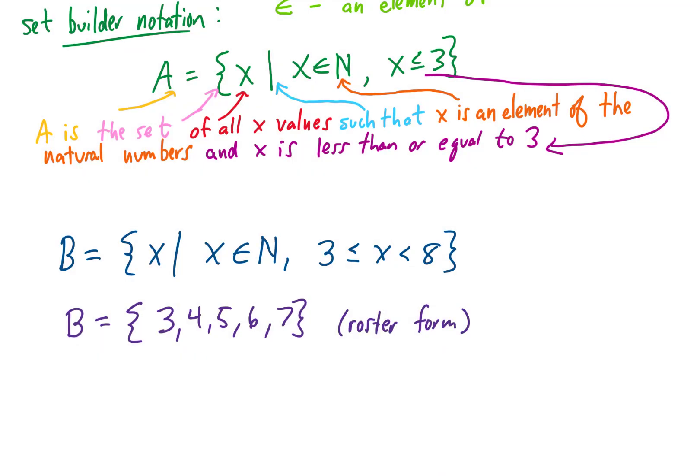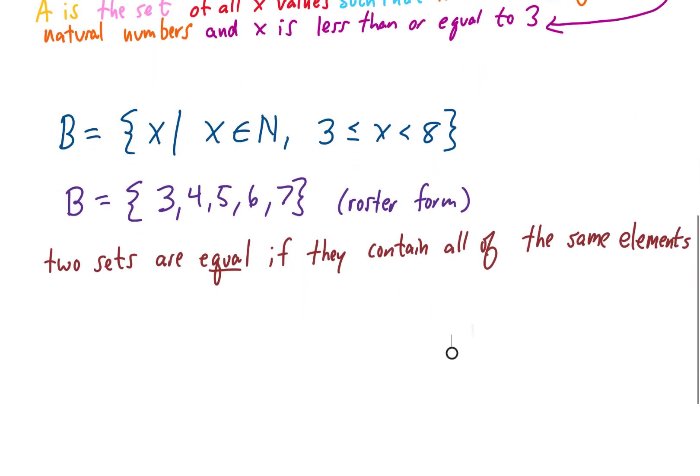Now if we have two sets, those two sets are said to be equal to each other if they contain all of the same elements. For example, the set {1, 2, 3} is equal to the set {2, 3, 1}.